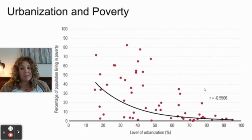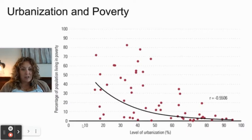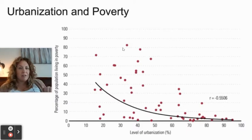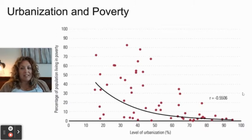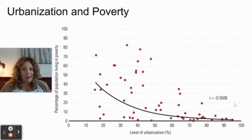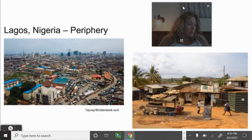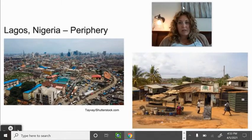Urbanization and poverty: looking at this graph, the x-axis shows level of urbanization from 10% to 100% urbanized, and the y-axis shows percentage living in poverty. The data suggests the less urbanized, the more poverty there is. People go to cities for job opportunities and education to get higher income, while people who remain in rural areas tend to be more subject to poverty.